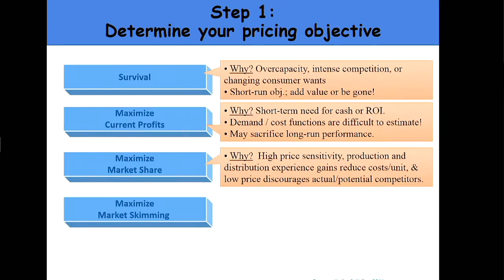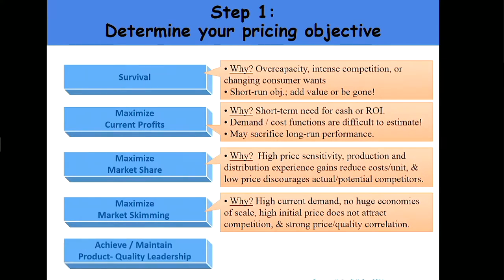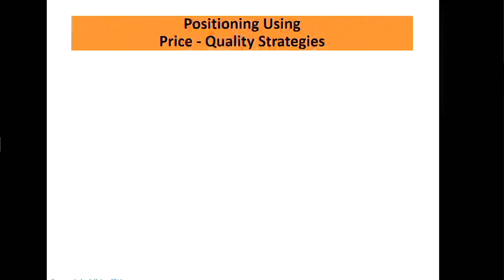A fourth objective might be to maximize market skimming — going to the top. The top is basically where we get the largest margin. We're going to try to skim the top, targeting the people who are getting the most out of the product. Conditions that favor skimming include no economies of scale. Quality leadership is another objective, often related to the company's traditional positioning. Those are five basic things you can do in terms of your pricing objective.